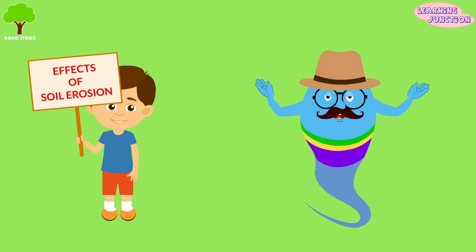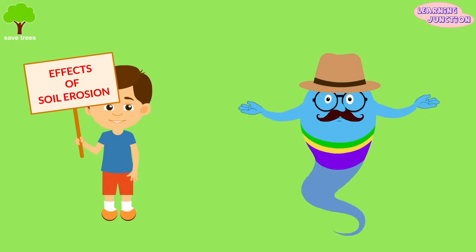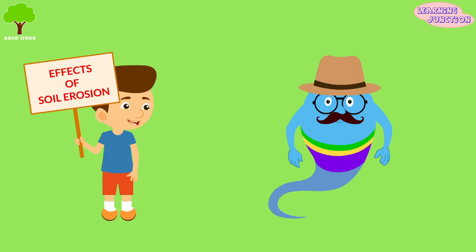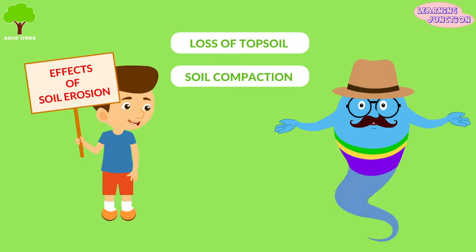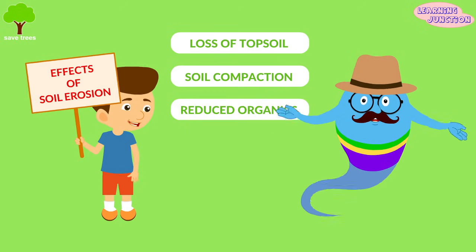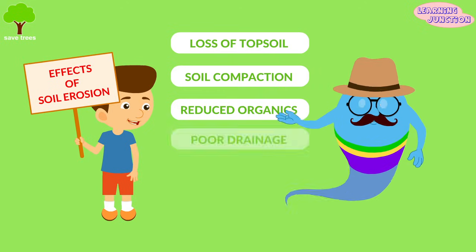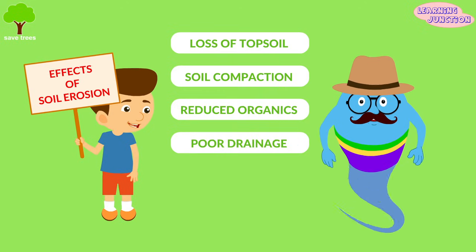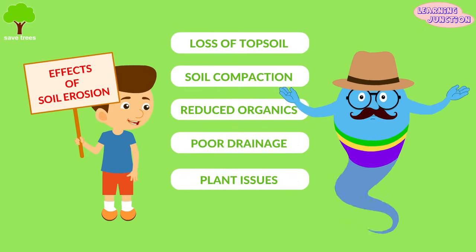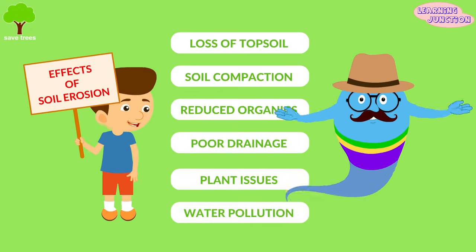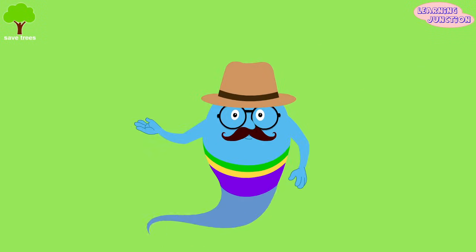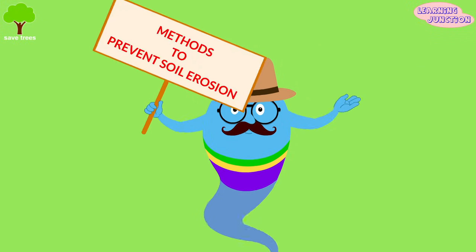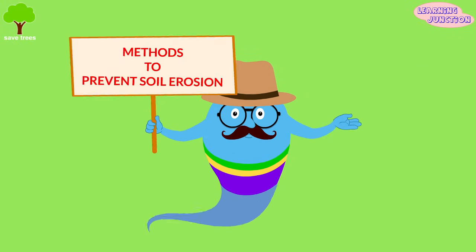Some of the greatest effects of soil erosion are loss of topsoil, soil compaction, reduced organic matter, poor drainage, issues with plant reproduction, and water pollution. But we can reduce this in the following ways.